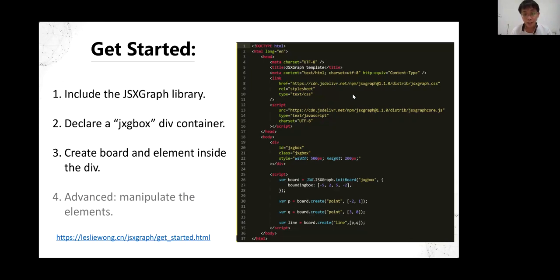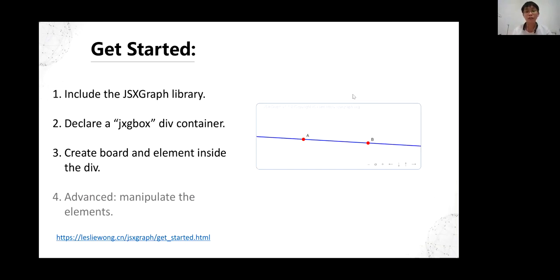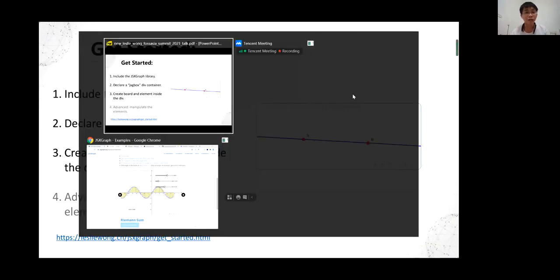We initialize a JSXGraph board and create two points, P and Q, compare these two points to get a line. Alright, this is the result of the full HTML file. Let's view it dynamically.